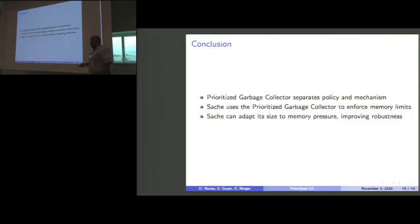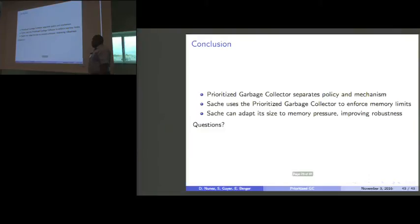So, that's what I have. In conclusion, we have, I present the prioritized garbage collection, which separates the policy of how do you manage the references from the mechanism that actually manages them. With that, we've built this space-aware cache, called the sache, to enforce the memory limits on the values that it stores. We can also show that we can adapt the sache in response to memory pressure in the program, which allows us to improve the robustness of that program. With that, happy to take any questions. Thank you.